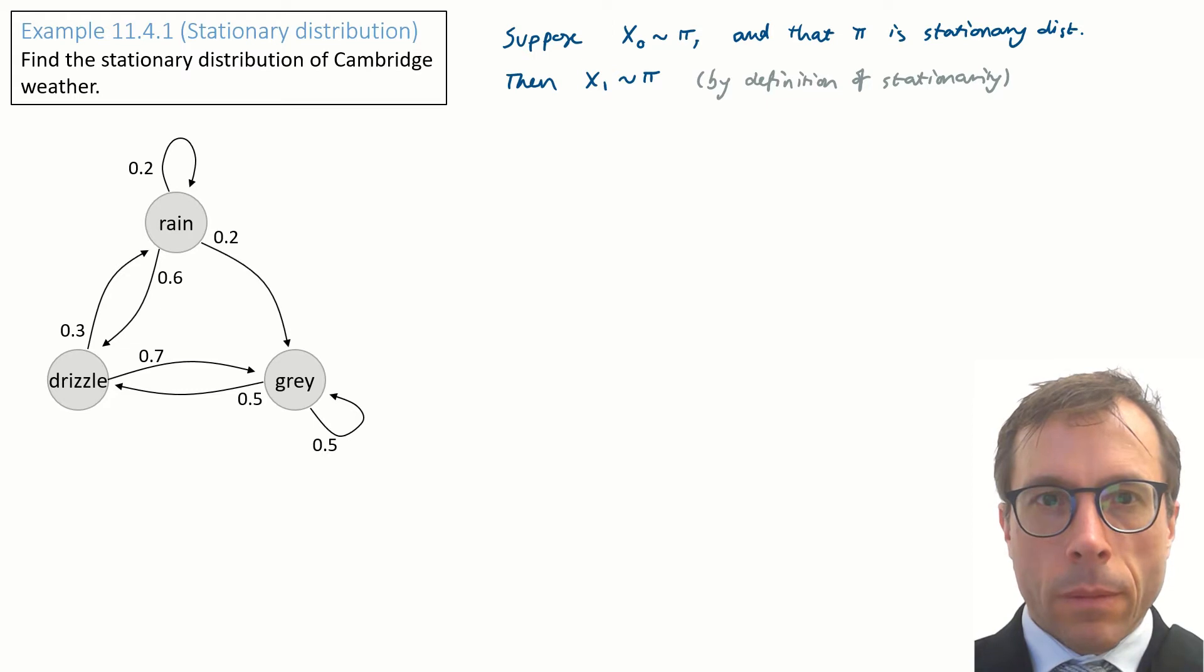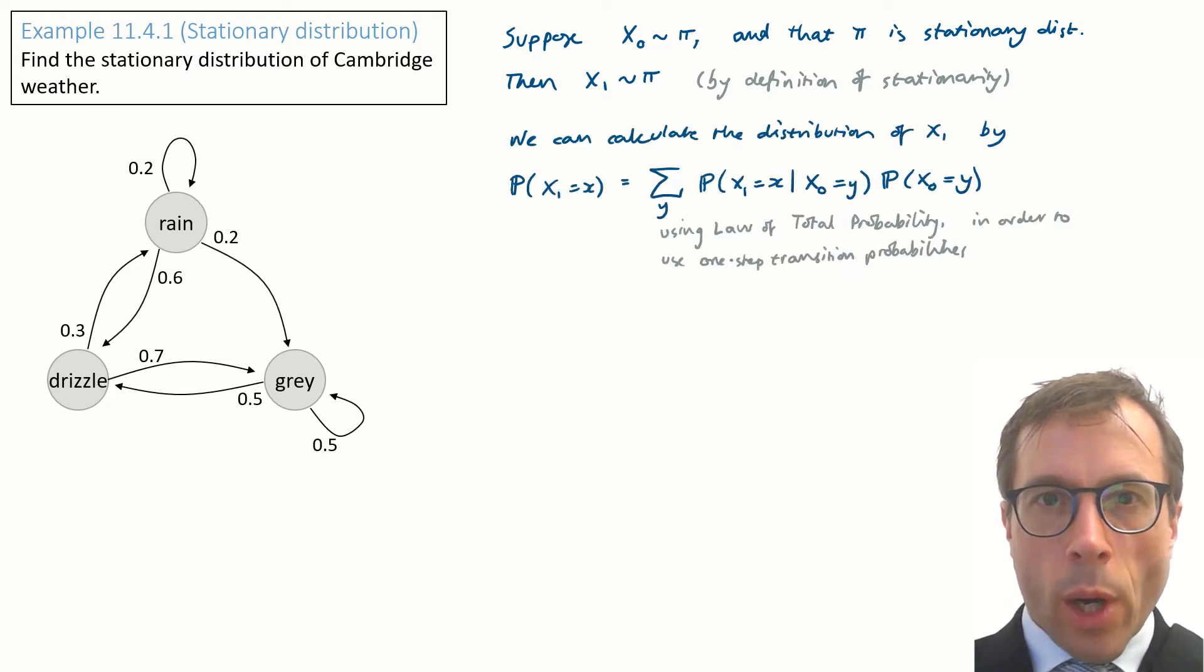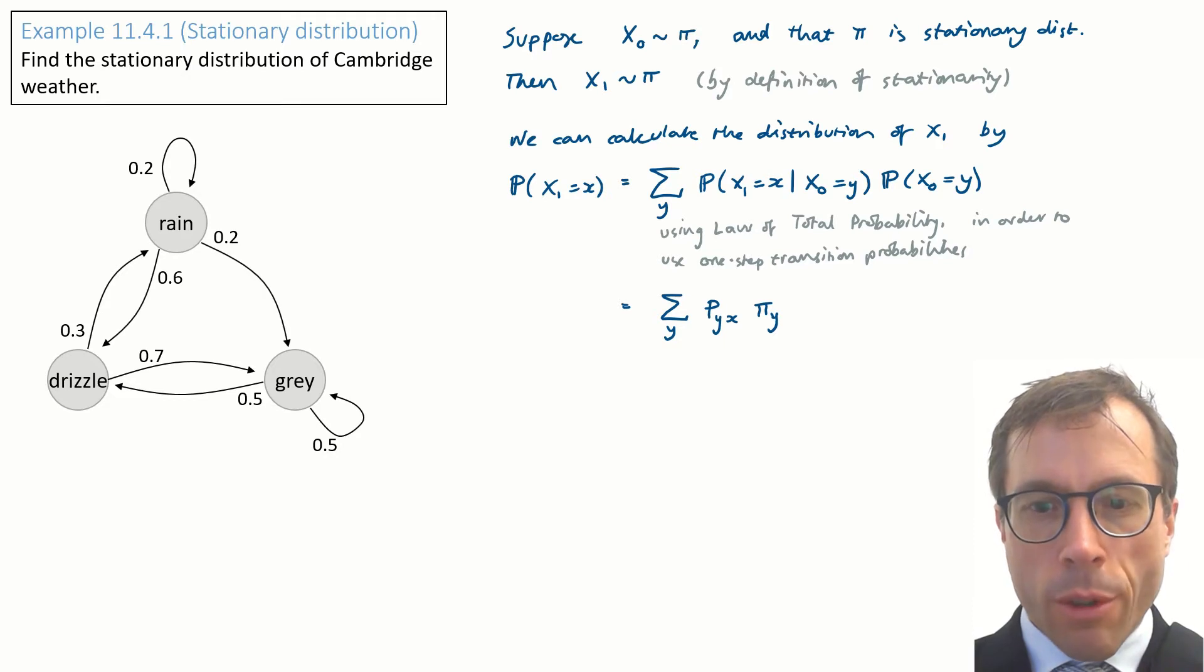But there is another way to get at the distribution of X₁ using all of the standard types of Markov chain calculation tricks that we saw in the last video. Here we're using the law of total probability to condition on X₀, because that lets us introduce the one-step transition probability. This is good. The first term is nothing other than the transition matrix, and the second term is π, the distribution that we assumed for X₀.